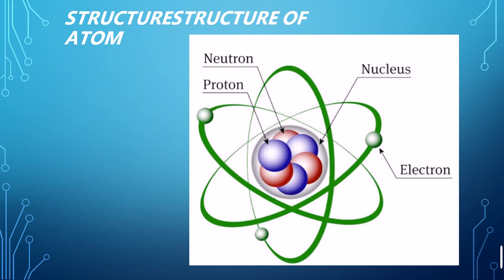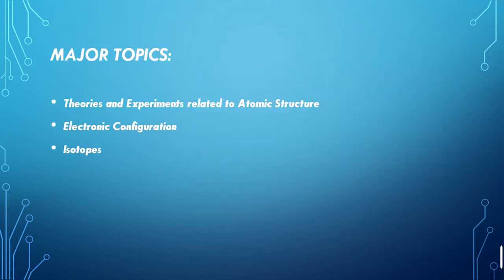In the past, we considered that the atom is not a divisible particle, not a divisible substance. But now in this century, we can say easily that it is a distinguishable and divisible entity that can be subdivided into different particles — the electrons, protons, and neutrons. Let's get started towards our new topic. In this chapter, we are getting knowledge about the different theories and experiments related to atomic structure.